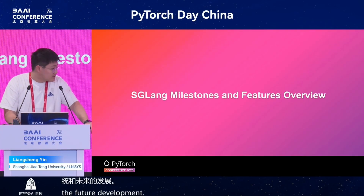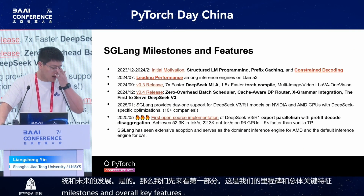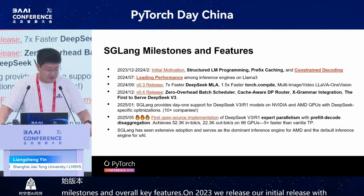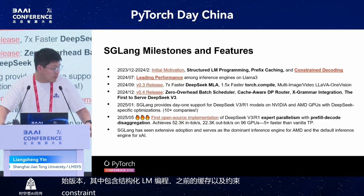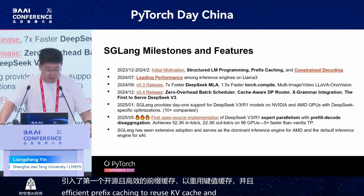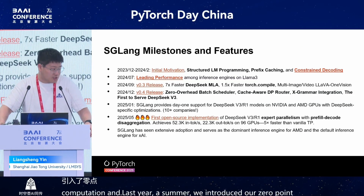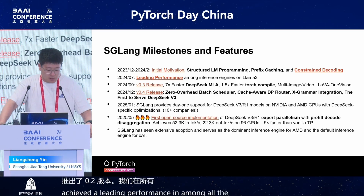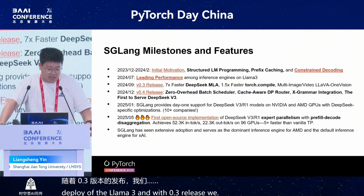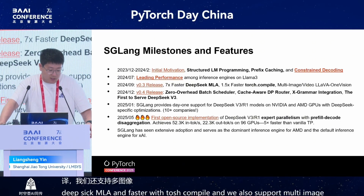This is our milestones and overall key features. In 2023, we released our initial version with structured LM programming, prefix caching, and constraint decoding — introducing the first open source efficient prefix caching to reuse KV cache and reduce redundant computation. Last summer, we introduced version 0.2, achieving leading performance among all open source implementations with LLaMA 3. With the 0.3 release, we delivered a seven-times faster DeepSeek MLA, faster Torch compile performance, and added support for multi-image and video models.